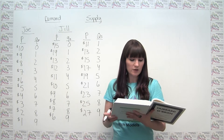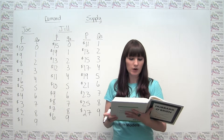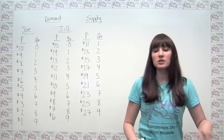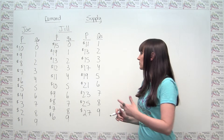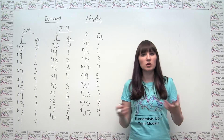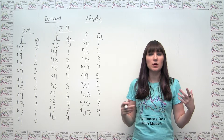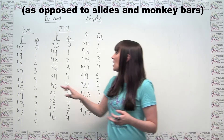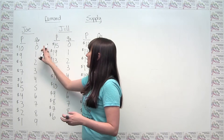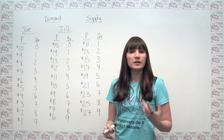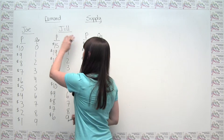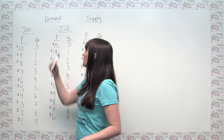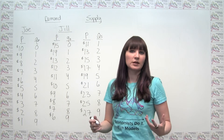Part A of the question says to draw a graph showing the optimal size of the park. In order to do that, we need to take a step back and think about the economic features of this park's market, and how we can aggregate up from the individual quantity demands — the individual willingness to pay of Joe and Jill — to some sort of market demand curve.